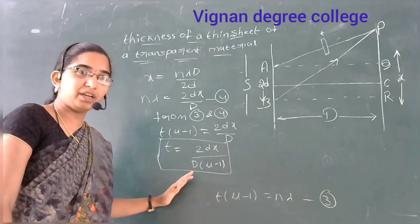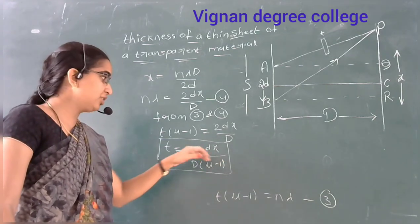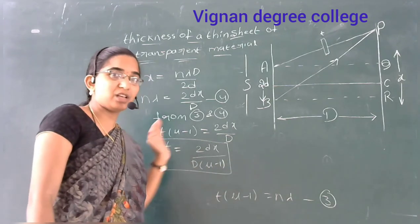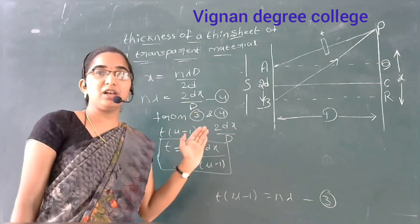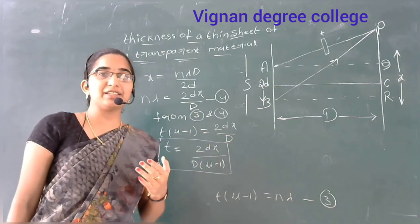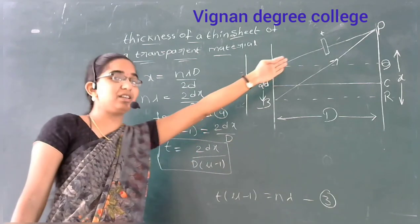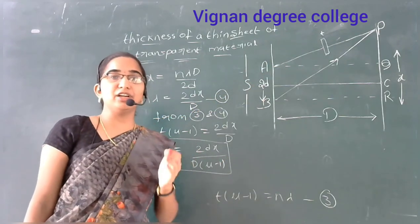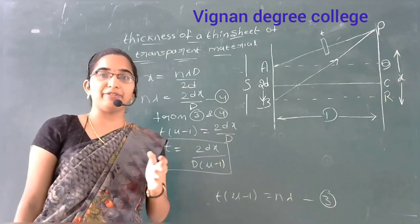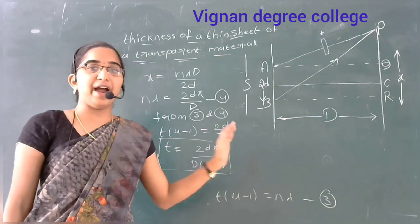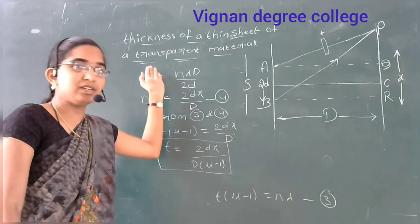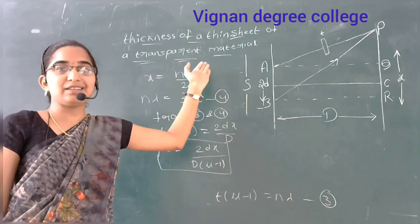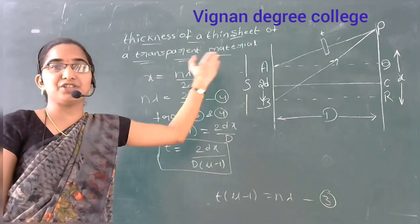By knowing T, 2d, and x, we can determine the thickness of the transparent sheet material. By replacing the transparent sheet material, the bandwidth is not affected — there is no effect on the bandwidth.